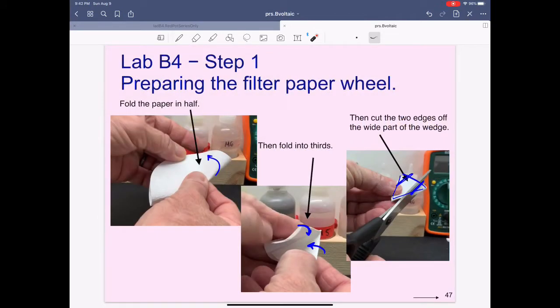Step one in this lab: we need to prepare the filter paper wheel. We'll fold the paper in half, then fold it into thirds, then cut the two edges off of this pizza wedge.